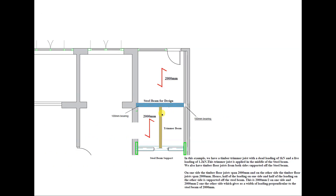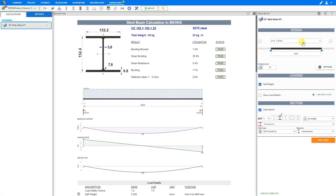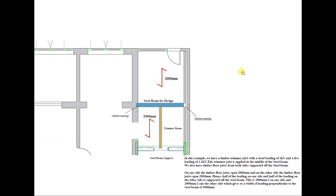In this example, we have a trimmer joist supported in the middle of the steel beam, and timber floor joists from both sides supported off the same steel beam. To start, we'll enter the steel beam effective length, or the effective span. This is the clear span of the steel beam — for our example, 3900 mm plus 100 mm bearing on one side divided by 2, plus 100 mm bearing on the other side divided by 2, giving us an effective span of 4000 mm.